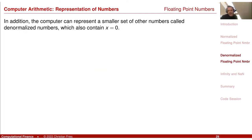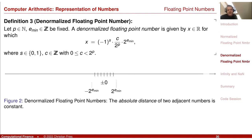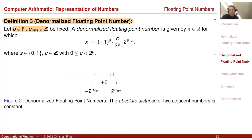In addition, the computer can represent a smaller set of numbers called the denormalized numbers. This set fixes the gap and also contains zero. Given P and E_min as before, the denormalized floating point numbers are defined as follows.